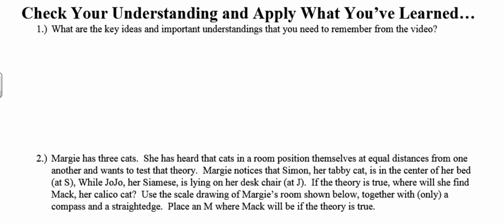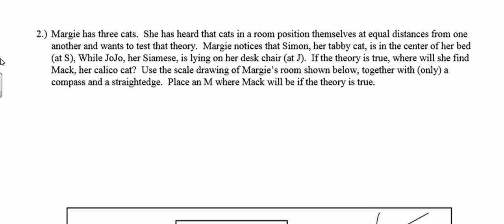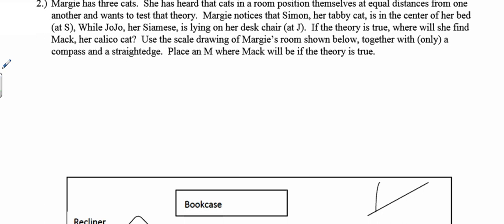I've talked about a lot of really important key ideas, so take a few minutes and summarize the highlights in your own words. Then take a look at the Margie and her cats problem. When Margie's cats have to be equal distances from one another, that's a way of asking you to draw an equilateral triangle — so that's a nudge in the right direction.